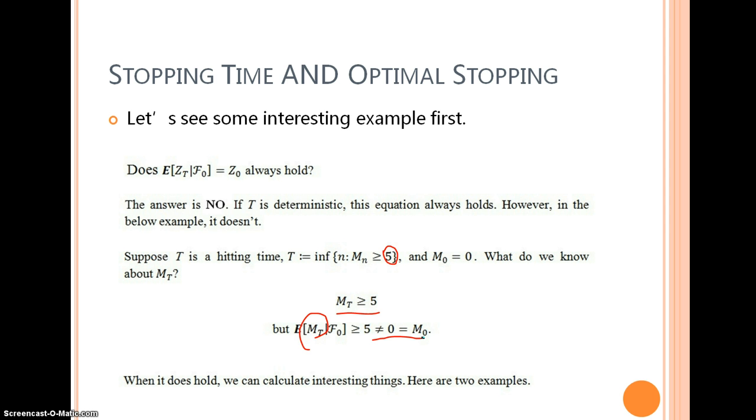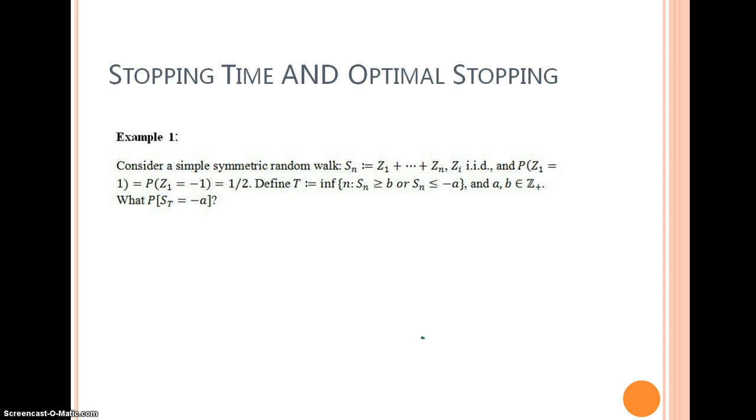Well, when it does hold, or when we assume it holds, we can calculate interesting things. Here are two examples. Consider a simple symmetric random walk S_n. Define t as a hitting time to hit either the upper threshold or the lower threshold. So what is the probability that the process will hit the lower threshold first?